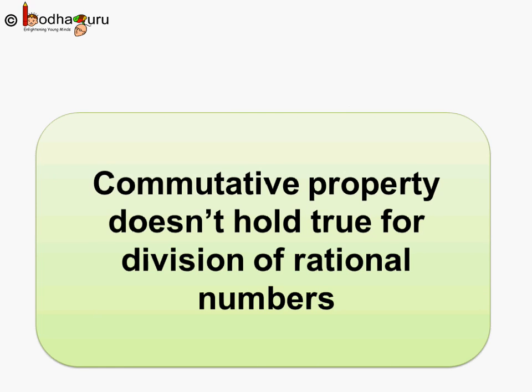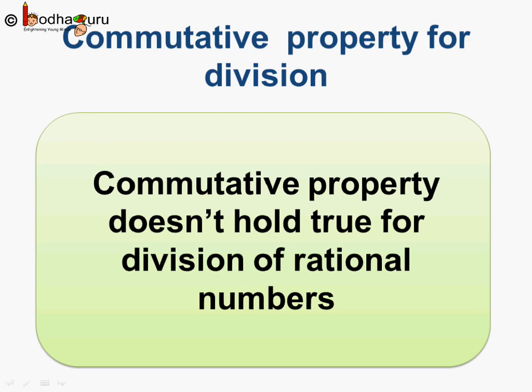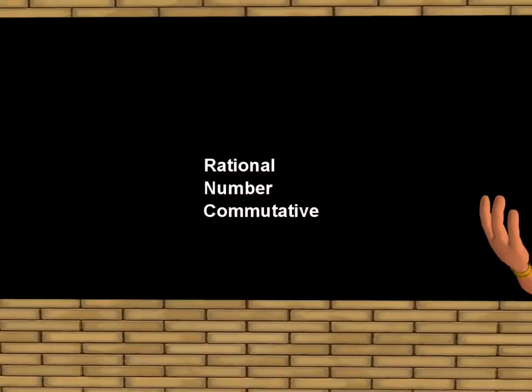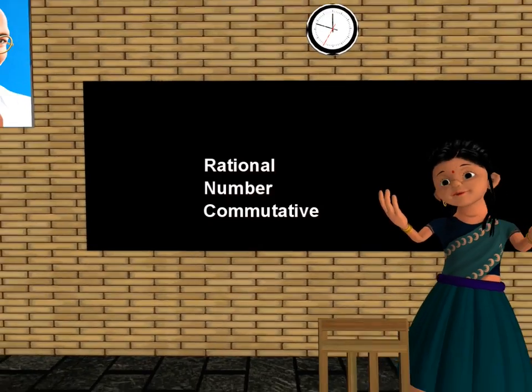What can we say? We can say commutative property does not hold true for division of rational numbers. So that was all for today. Bye bye children.